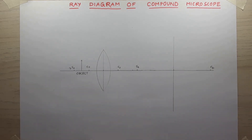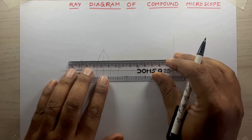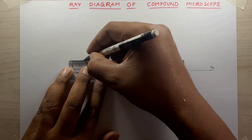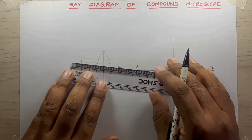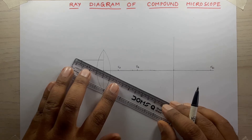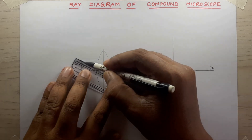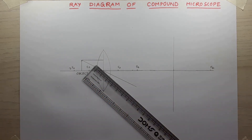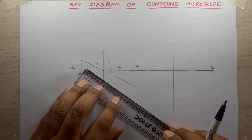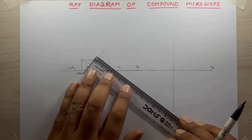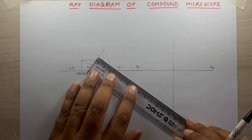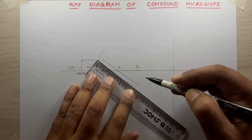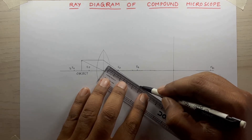Now I will create the ray diagram. Remember, one ray will be parallel to the base and another one will go through the center of the lens. That will create an inverted but real image. The ray that is parallel to the base will pass through the focal point.